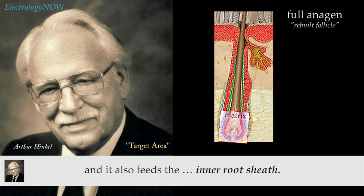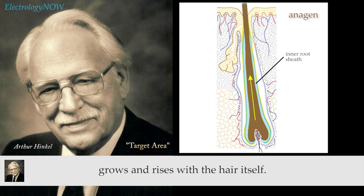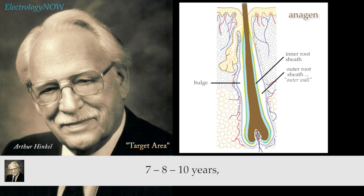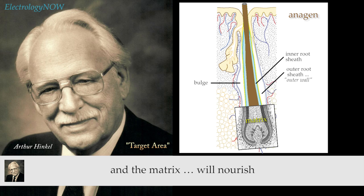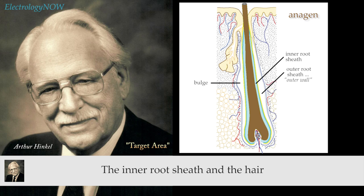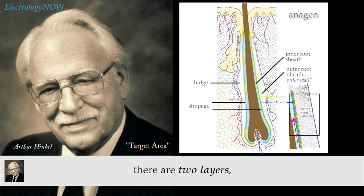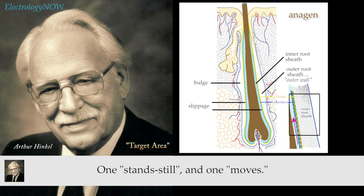The fully formed papilla sends its nourishment and supply to the matrix, which feeds the hair shaft itself — the medulla, the cortex, and the inner root sheath. The inner root sheath grows and rises with the hair. Once the follicle's outer root sheath has reached its full depth, there is no longer any mitotic action in that outer wall. For a scalp hair, that means for 7, 8, or 10 years, the follicle just remains the follicle, with all stimulation going to the matrix. The inner root sheath and the hair rise together, requiring a slippage between the outer and inner root sheaths — through Henley's layer and Huxley's layer.